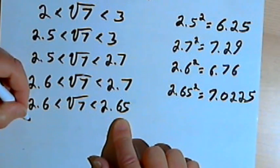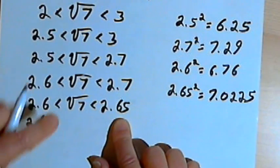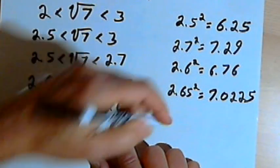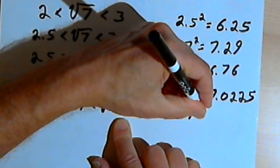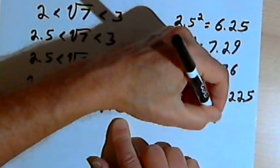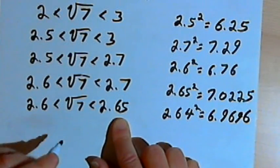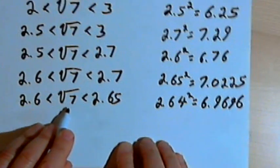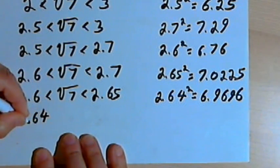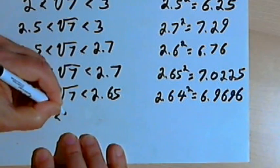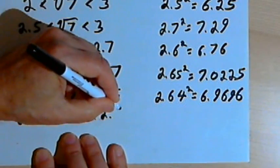I'm looking for a number between 2.6 and 2.65. Since 2.65 squared was really close to 7, I'll try 2.64. 2.64 squared is 6.9696, which is less than 7. So now: 2.64 < square root of 7 < 2.65.